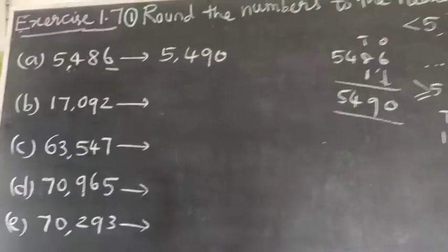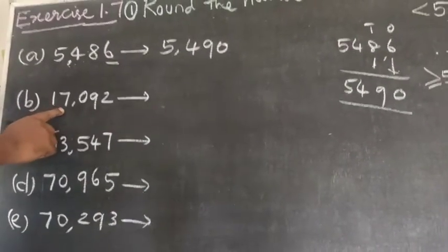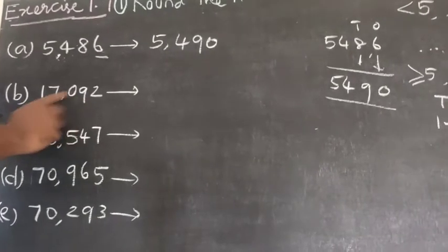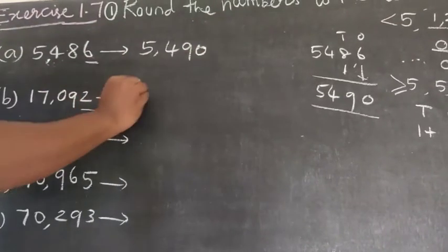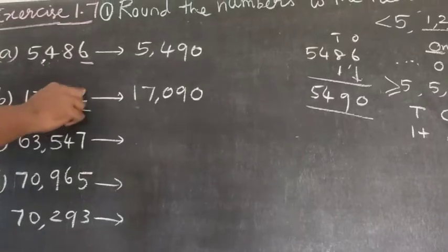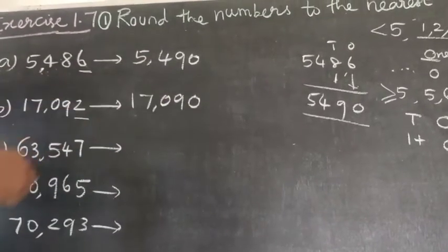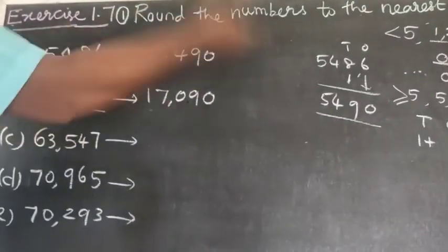Second question B: 17,092. The last digit is two, which is less than five, so no change. The answer is 17,090.